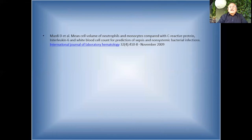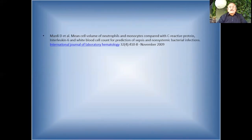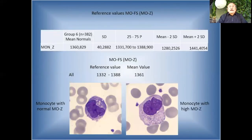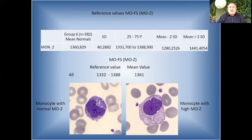Here another study that also used monocyte Z compared with C-reactive protein for bacterial infections, from Mardi et al., published in 2009. Here we can see the reference values for monocyte forward scatter (monocyte Z), and an example of a normal monocyte versus a big monocyte - monocyte macrocytosis - that we can see in a case of COVID-19, which we will discuss in the COVID-19 presentation.